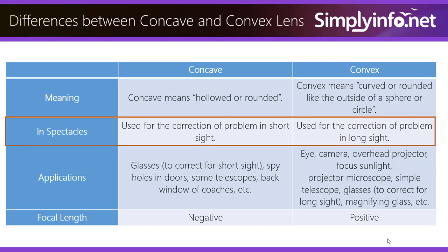In spectacles, a concave lens is used for the correction of short sight, whereas a convex lens is used for the correction of long sight.